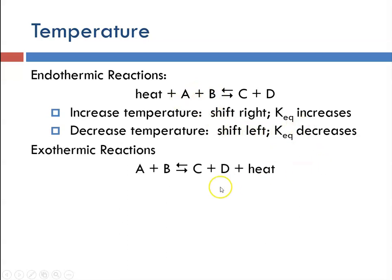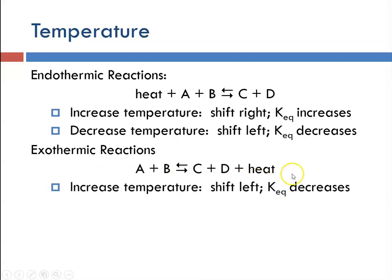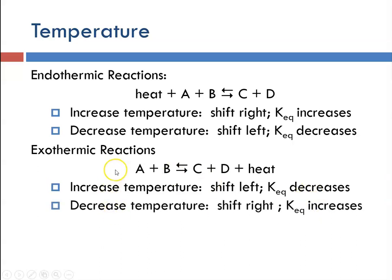For an exothermic reaction, heat is written on the product side because exothermic reactions produce heat. An increase in temperature will shift the equilibrium toward the left, so reactants will be increasing, and as a result Keq would decrease — remembering reactants are in the denominator, so as the denominator gets bigger, the value goes down. If we decrease the temperature, that would shift things toward the right to produce more heat, and since more products are produced — products are in the numerator — the value of the equilibrium constant would increase.